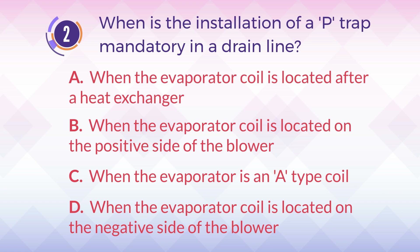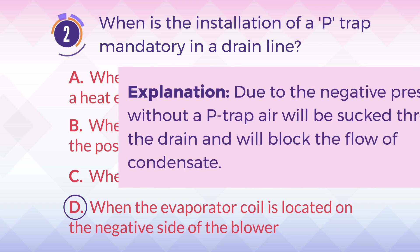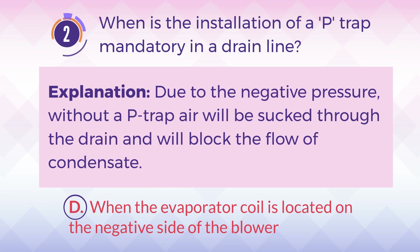The answer is D. When the evaporator coil is located on the negative side of the blower. Explanation: Due to the negative pressure, without a P-trap air will be sucked through the drain and will block the flow of condensate.